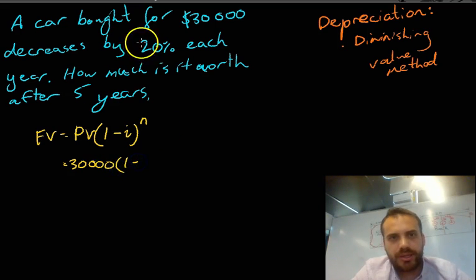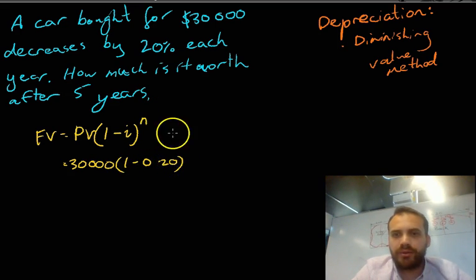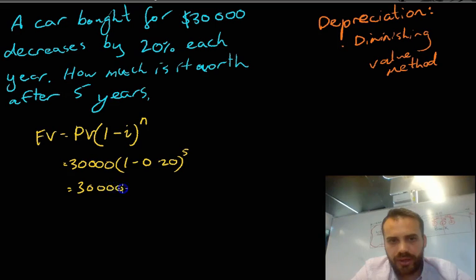And, 1 minus, it's decreasing by 20%, so that's going to be 1 minus 0.2, and then raise it to the power of 5. I'm just going to do one more line here. 1 minus 0.2 is going to be 0.8, and we're going to raise that to the power of 5.